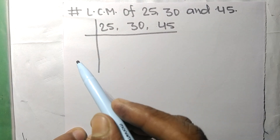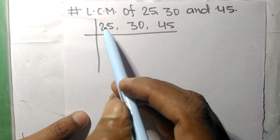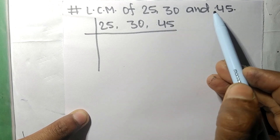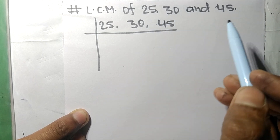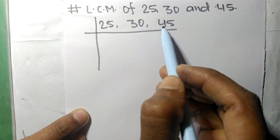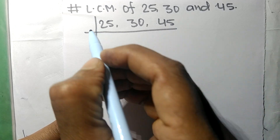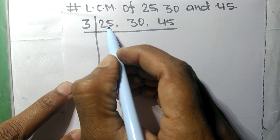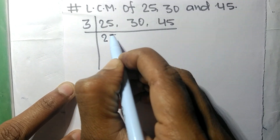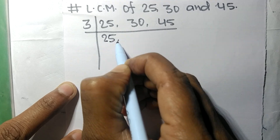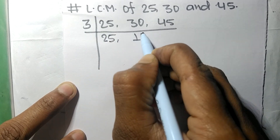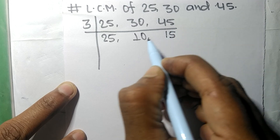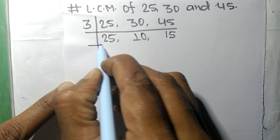Today in this video we shall find the LCM of 25, 30, and 45. 30 and 45 are divisible by 3, but 25 is not, so it stays the same. 3 times 10 is 30, and 3 times 15 is 45.